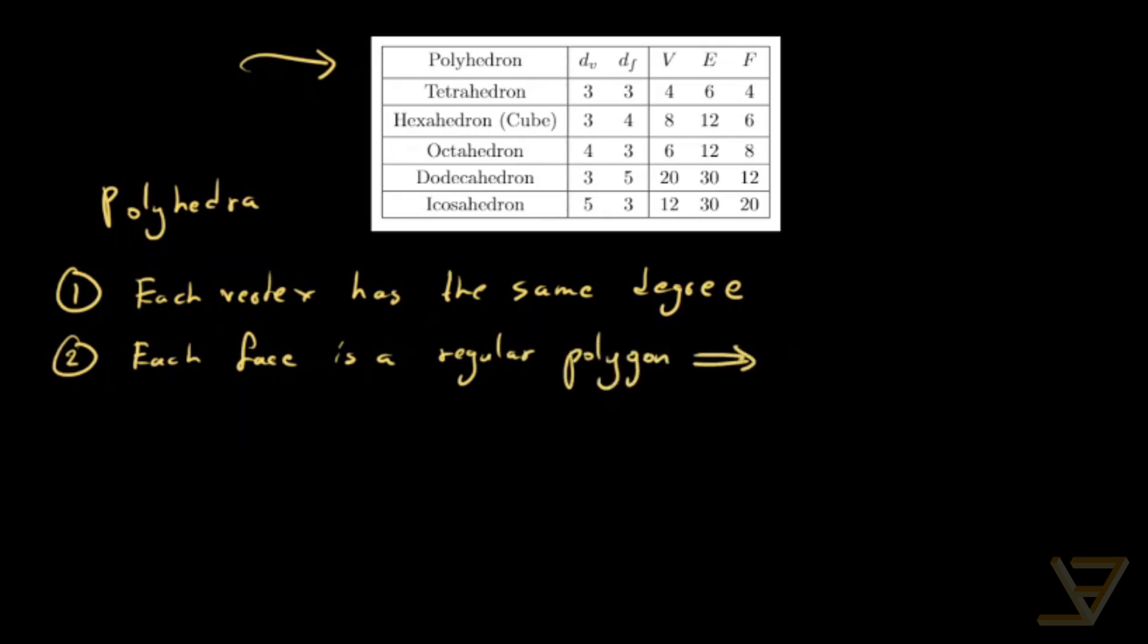So in particular, that implies that the degree of F are all the same. By degree, in this case, since we don't have any one-faced edges, they're all two-faced edges, what I mean by degree is that the number of edges is on the boundary of the face.